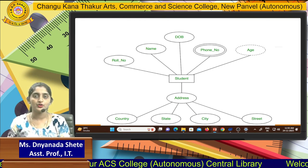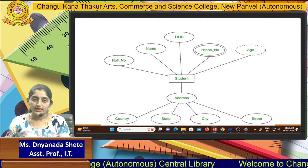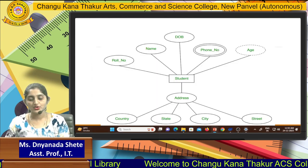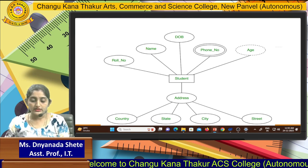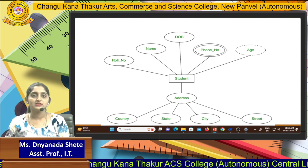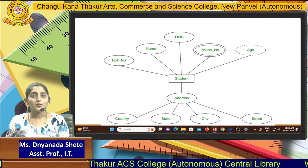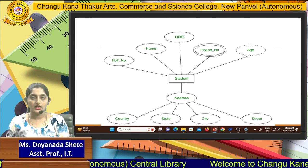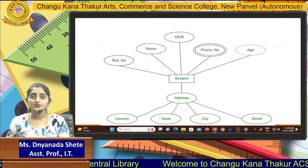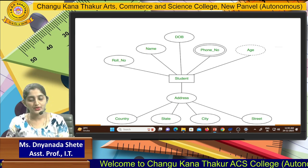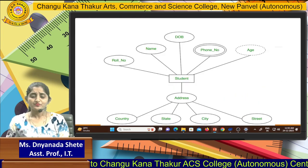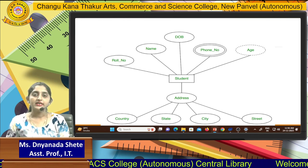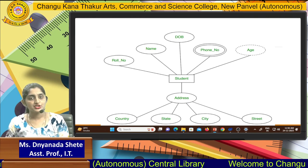In this ER diagram, next we have double ellipse. Double ellipse means multi-valued attributes. Here, phone number is shown with a double ellipse since phone number is not a mandatory thing in this model. One more attribute in this diagram is age. So this is your actual ER model. In this model we are not providing any relationship because this is a simple ER diagram.